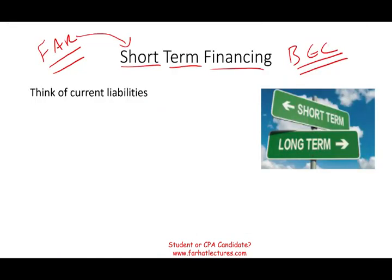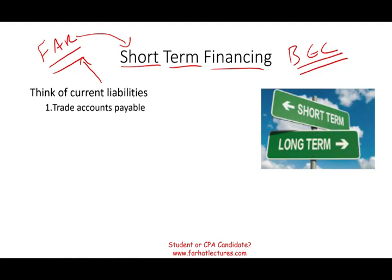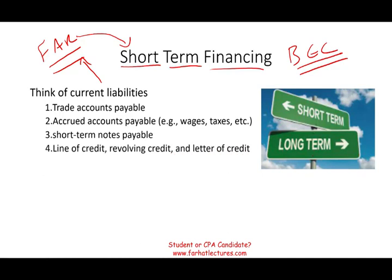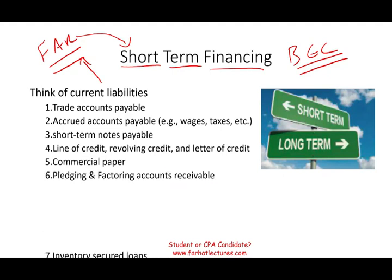Let's take a look at short-term financing. When you hear short-term financing, you should be thinking about current liabilities — short-term obligations you have to pay off within the next 12 months, which puts pressure on your cash flow. We're going to discuss trade or accounts payable, accrued liabilities, line of credit, revolving credit, letter of credit, commercial paper, pledging and factoring of receivables, and inventory secured loans.